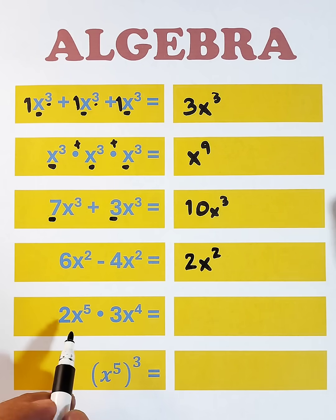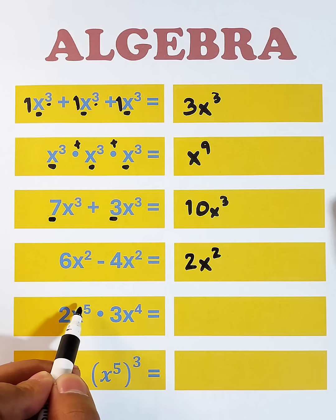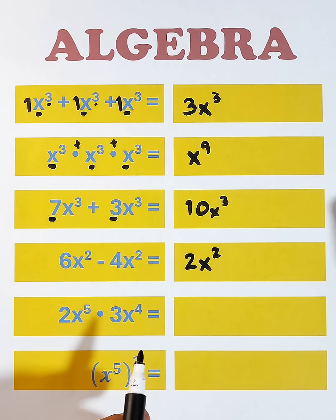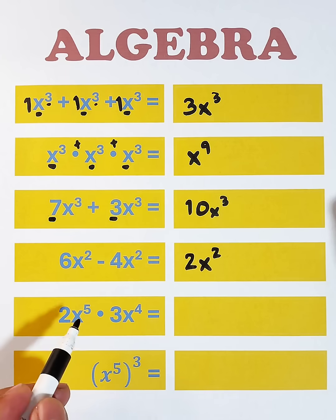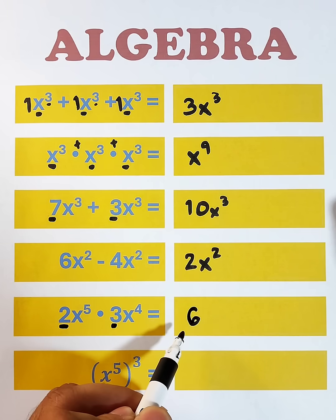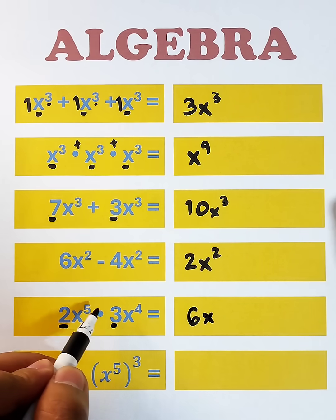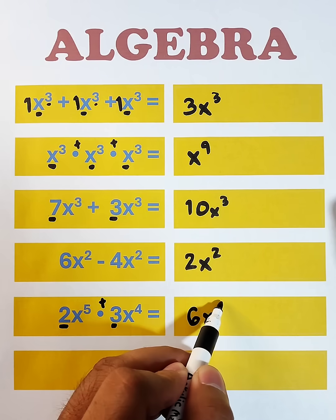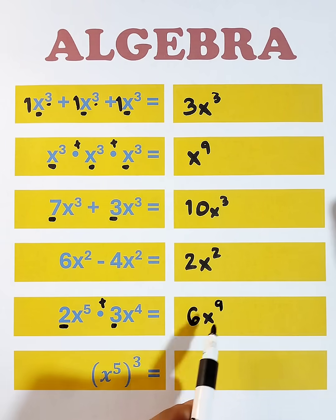Next, this one is multiplication. 2x raised to the 5th power times 3x raised to the 4th power. The basic requirement here to multiply expressions is that we need the same variable. For the exponent, we don't need the same exponent, so we can multiply it. 2 times 3, that would be 6. Copy the same variable, then add these exponents, 5 plus 4, that is equal to 9. And the answer is 6x raised to the 9th power. And it's your turn to simplify this expression.